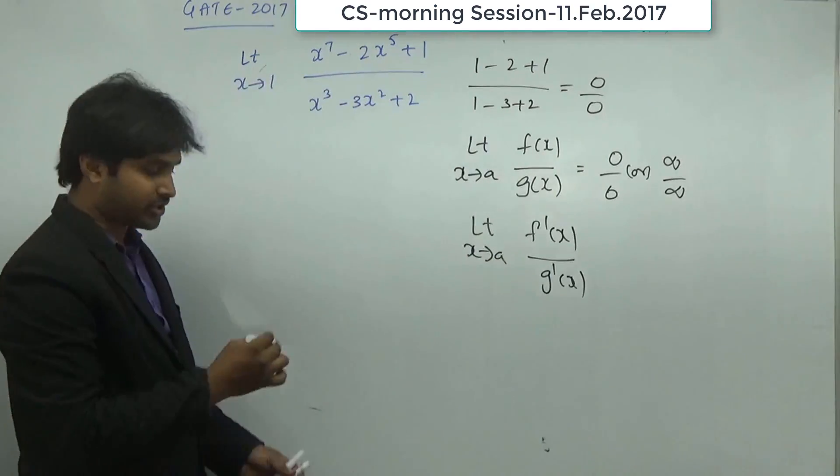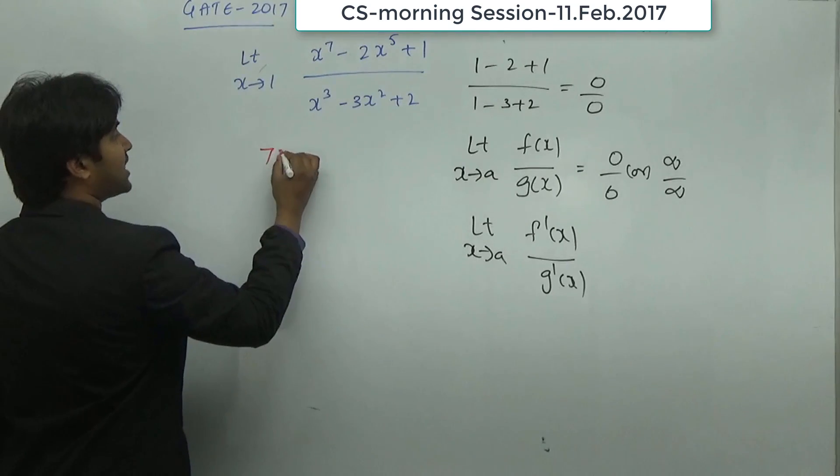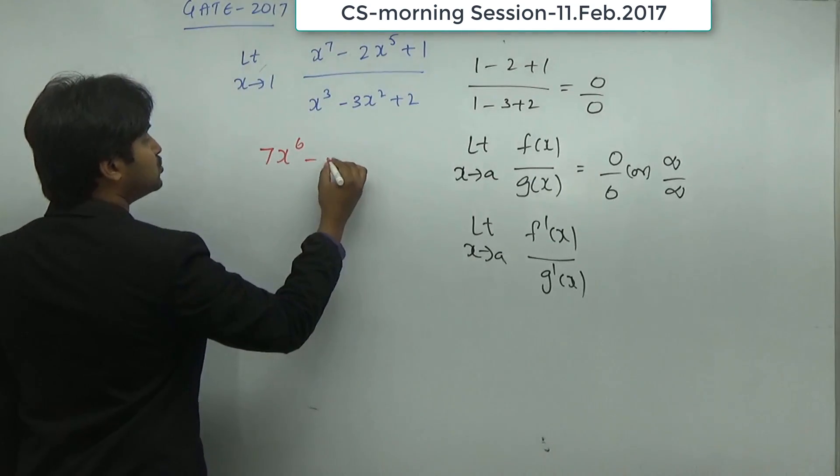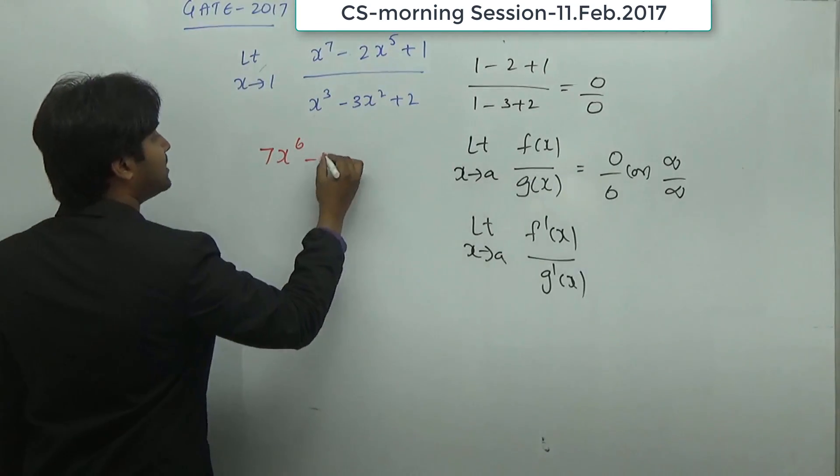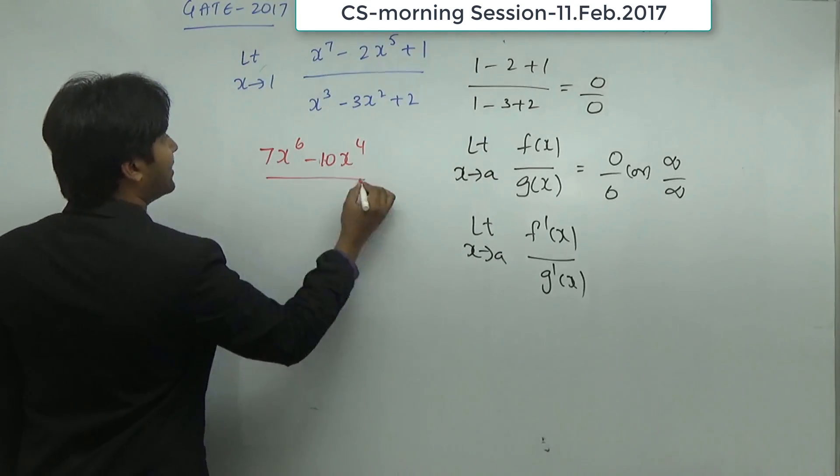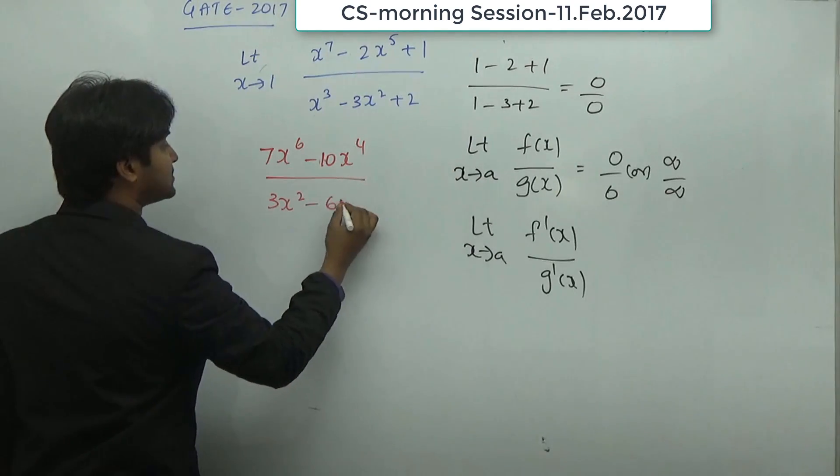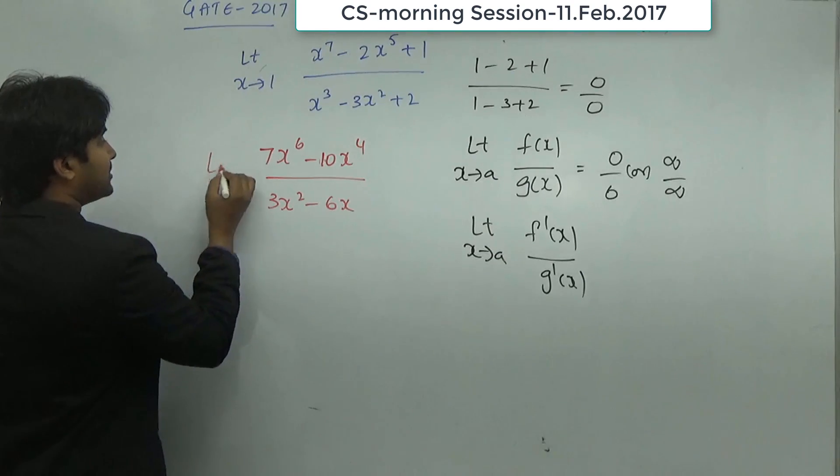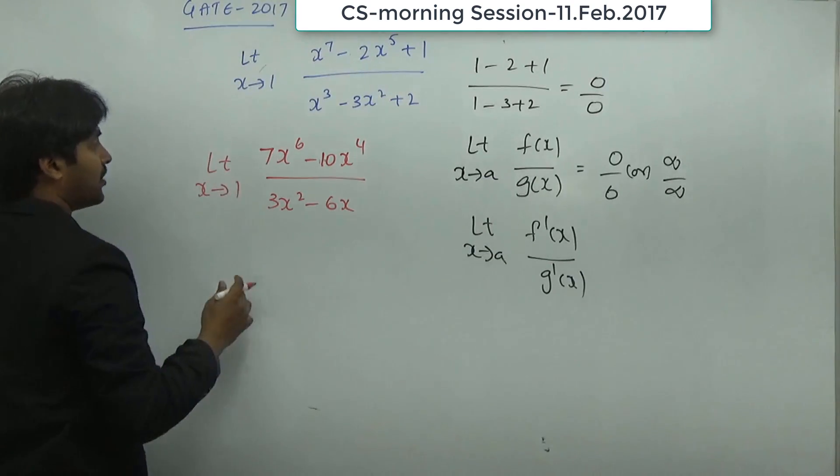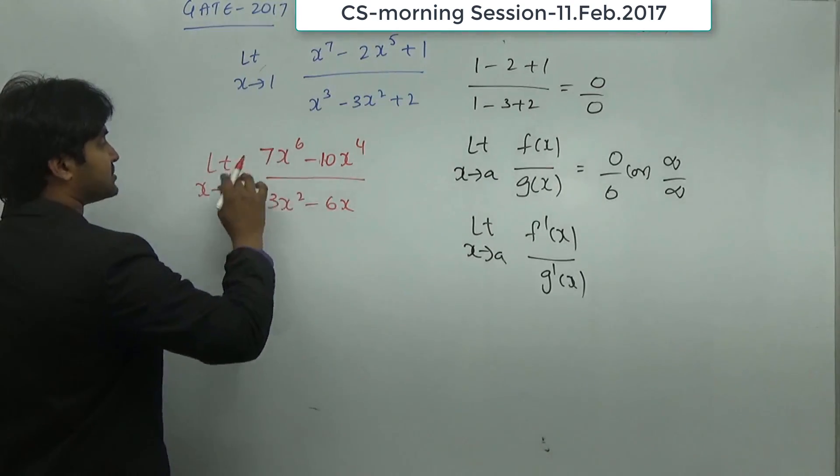This is the same thing that I'm going to do here. If I do that, you're going to have 7x^6 minus 2 into 5, which is equal to 10x^4, divided by 3x^2 minus 6x, with limit x tends to 1. If you do that, you directly put the value of x is equal to 1.